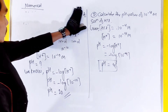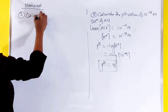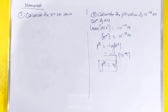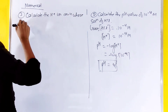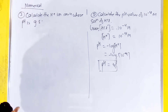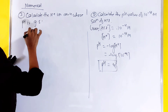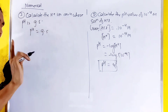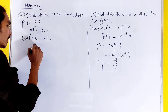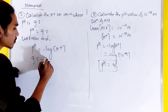Now we have the third question: calculate the H⁺ ion concentration whose pH is 9.5. So pH is 9.5. We know pH equals negative log of H⁺. So negative log of H⁺ equals 9.5.